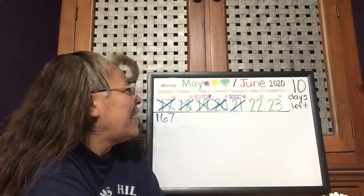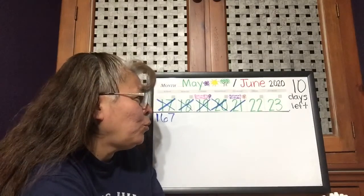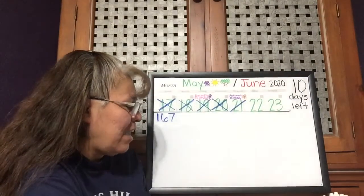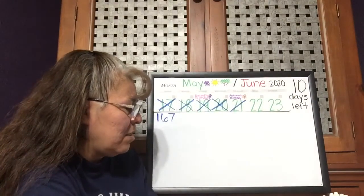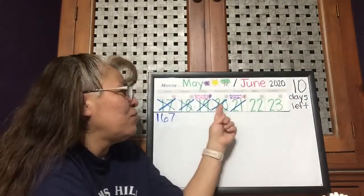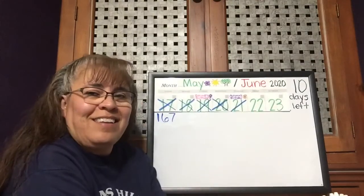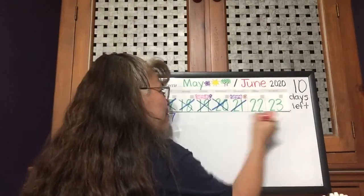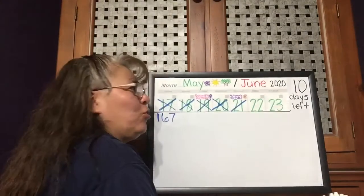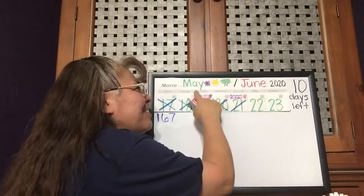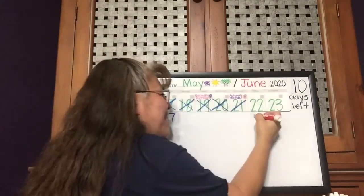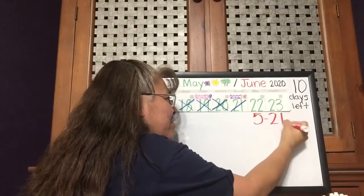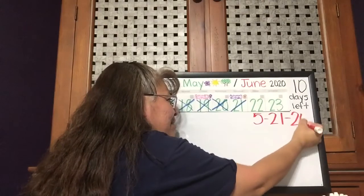Okay, so today is — if yesterday was Wednesday, yesterday was the middle of the week. So today is Thursday. Oh, not June — I saw June right here — it is May. May 21st, 2020.